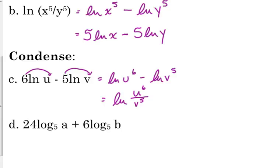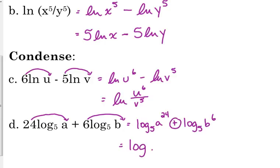Same thing with example d here. We start by moving the exponents. Log base 5 of a to the 24th plus log base 5 of v to the 6th. We're adding those two logarithms so it becomes the log of their product. I would put parentheses around this. Just to be clear that both of those are inside the logarithm.